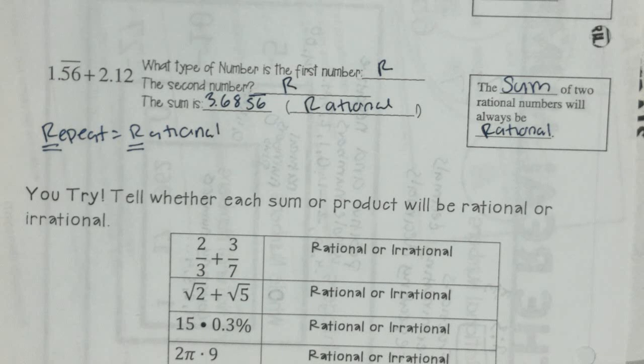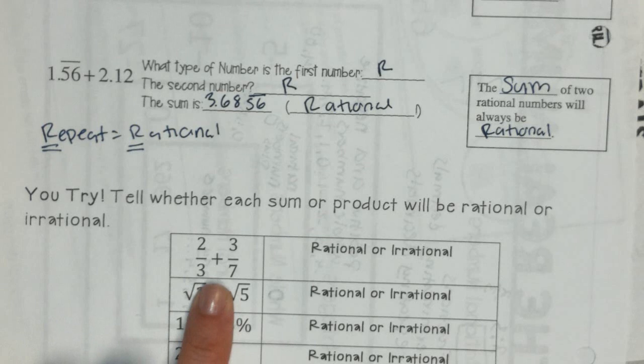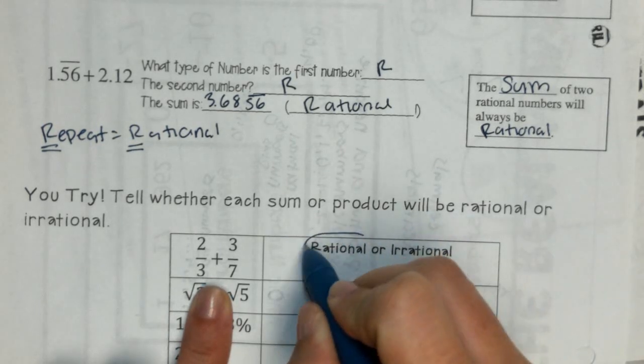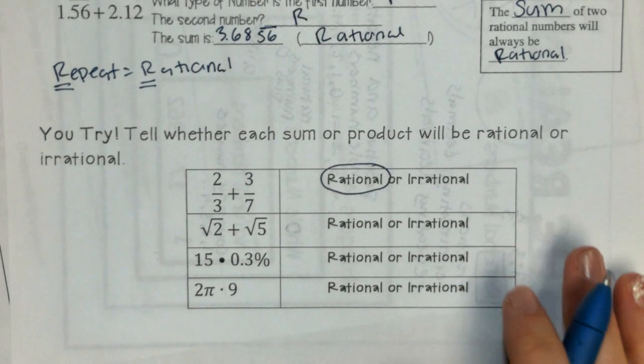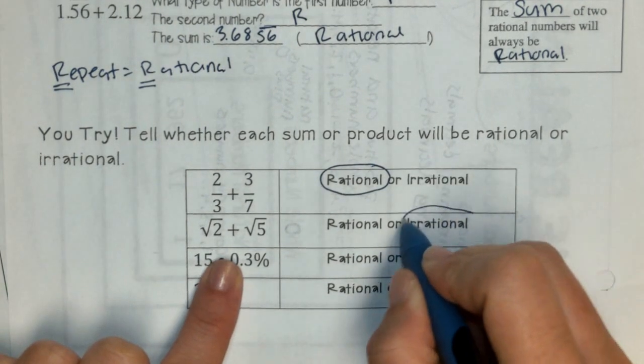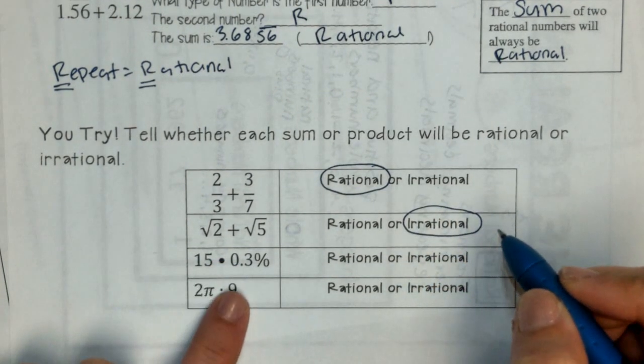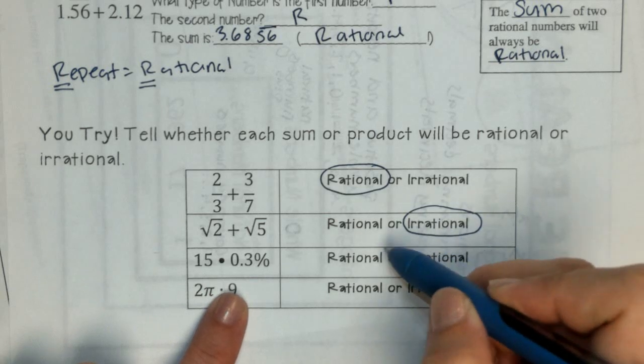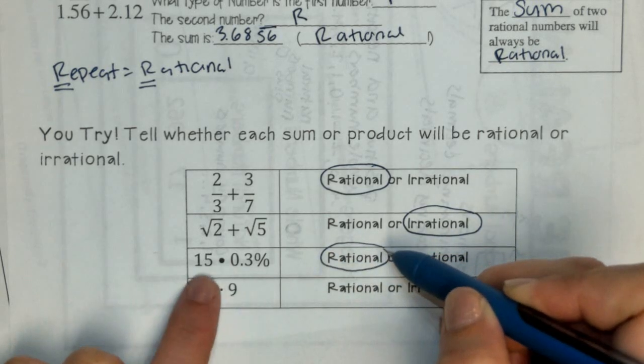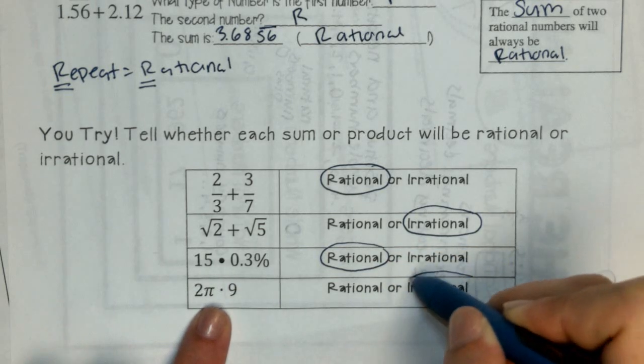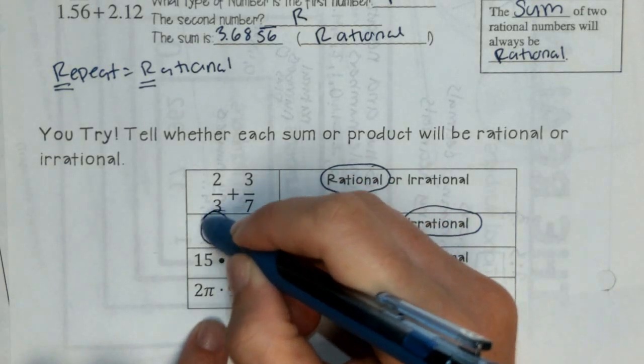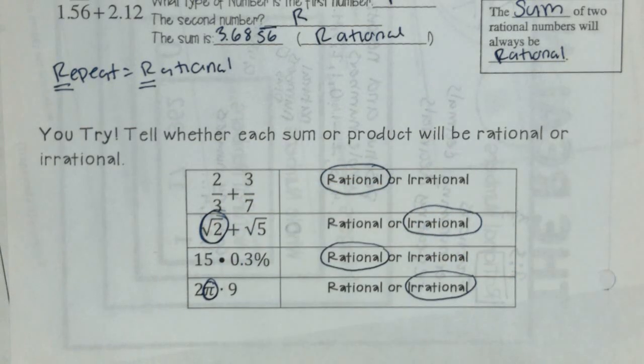And down at the bottom, we'll just do this together. We can shout out rational or irrational. Two fractions added together? Rational. Two square roots added together? Irrational. 15 times 0.3%? Rational. These are both rational numbers. And 2 pi times 9? Irrational. So, when they have part of it that's irrational, the answer will be irrational.